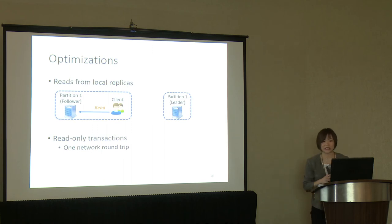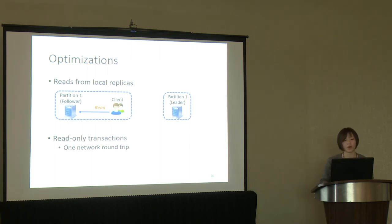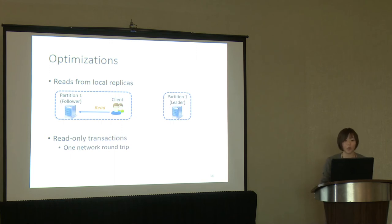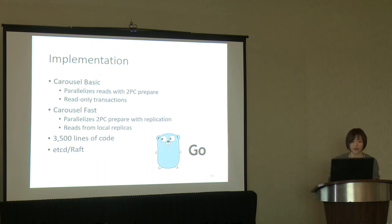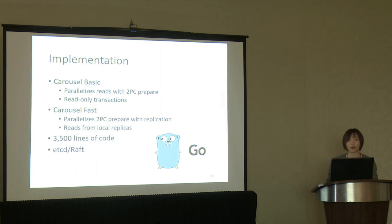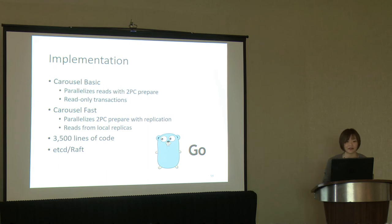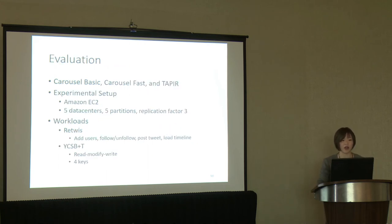In addition to these two main techniques, Carousel also implements two optimizations already introduced by other systems. One is reading from local replicas, which offers lower latency, and another is supporting read-only transactions using one wide area network roundtrip. We implemented two versions of Carousel: Carousel Basic includes mainly the first technique and takes advantage of the read-only transaction optimization; Carousel Fast has everything from Carousel Basic, further implements the second technique, and also allows reading from local replicas. This prototype is implemented in Go and consists of 3,500 lines of code using an open source Raft implementation.